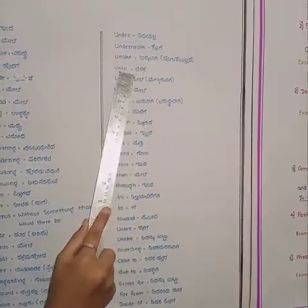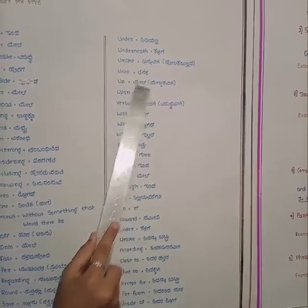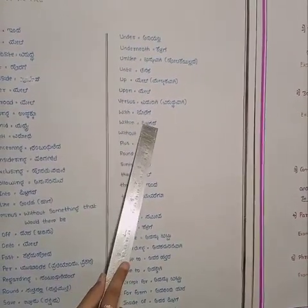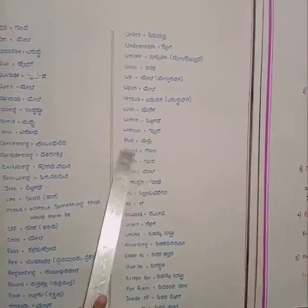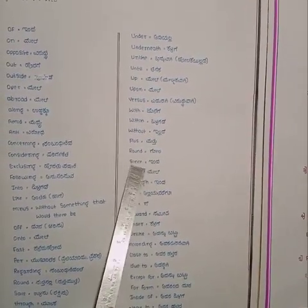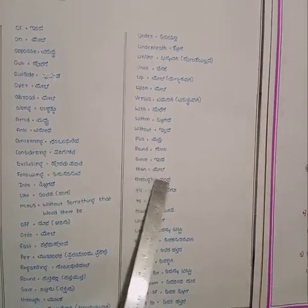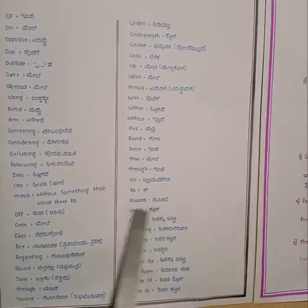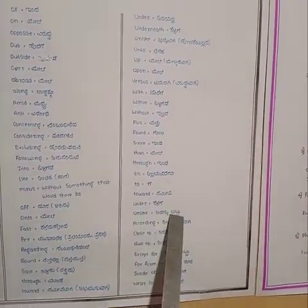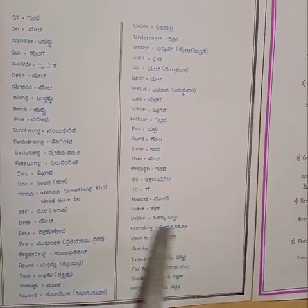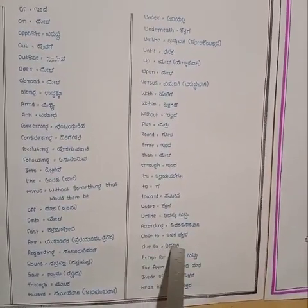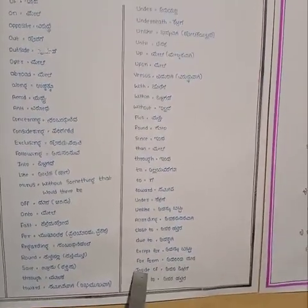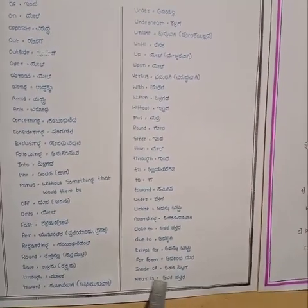Unlike - binna vaagi. Until - tanaka. Up - mele. Upon - mele. Versus - eduragi. With - jotage. Within - valaagale. Without - hilladay. Plus - matthu. Round - goal. Since - then mele. Till - aliyah varage. To - gay. Towards - samipa. Under - kelaage. Unlike - adhanu bittu. According - adhakkanu saravagi. Close to - adharathira. Due to - adhakkagi. Except for - adhanu bittu. Far from - adharindha dura. Inside of - adharavadage. Near to - adharathira.